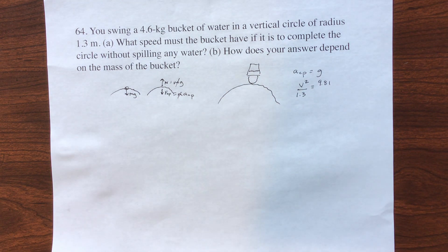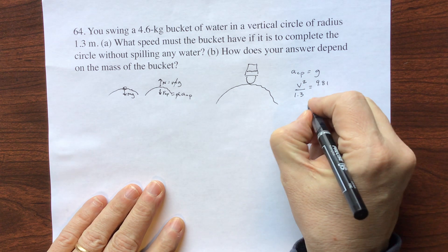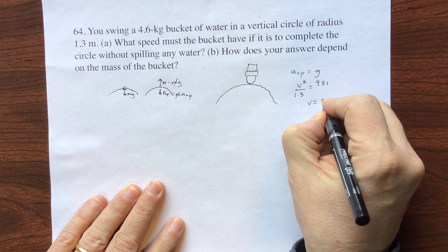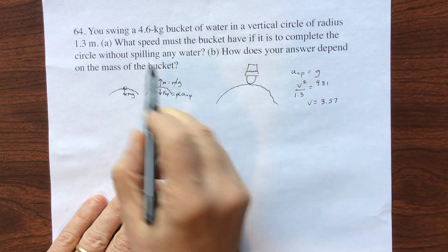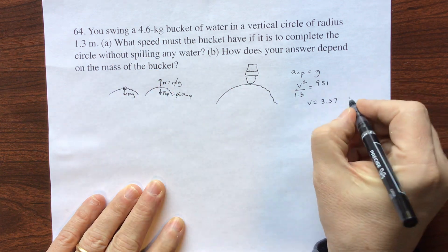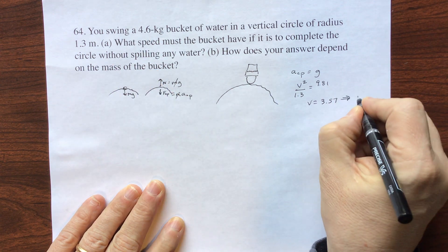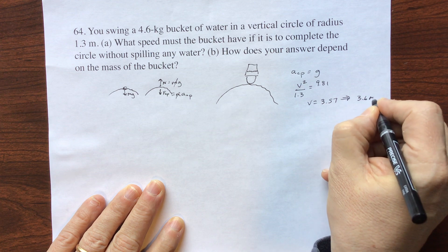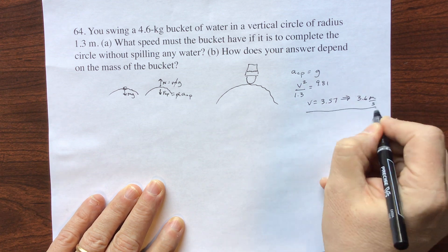So the math is actually pretty simple. This is just going to be 9.81 times 1.3 square root of that. And I get V equals 3.57 to two significant digits. So 3.6 meters per second. So this is A.